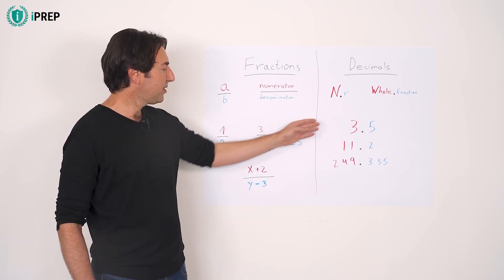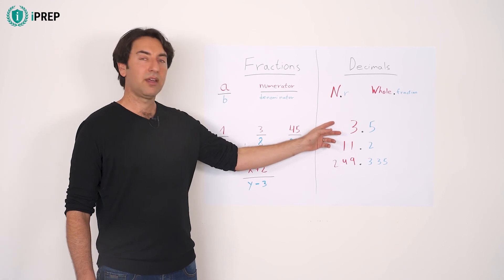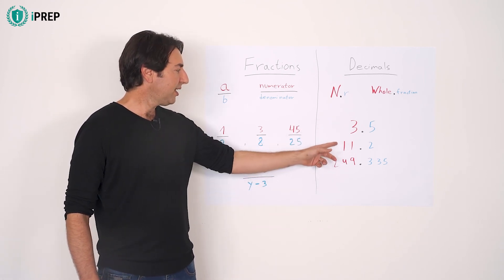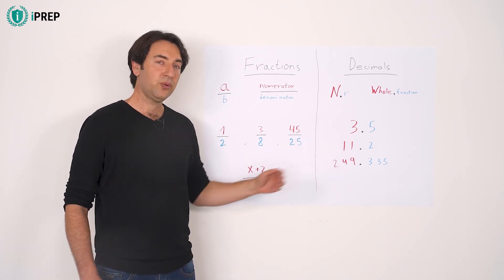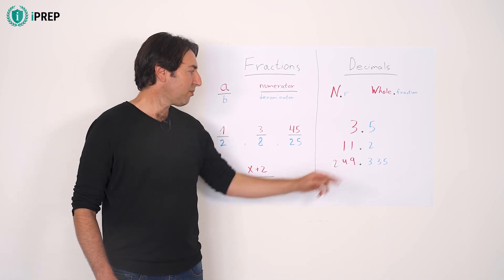Here are a few examples of decimal digits: three and a half, 11.2, and 249.335.